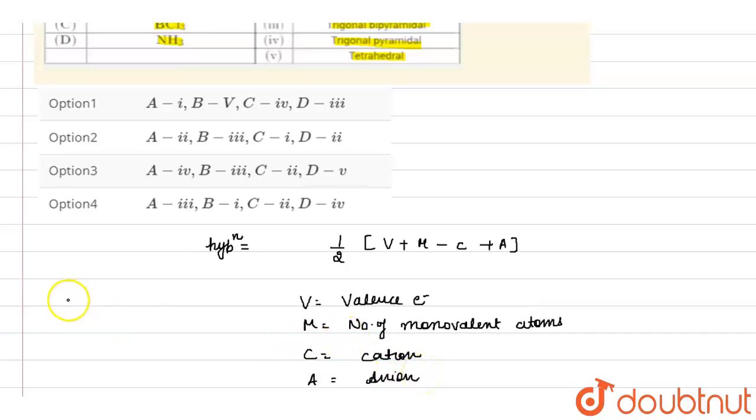And when the hybridization, when this value comes out to be 4, the hybridization is sp3. And the possibility of the shape can be tetrahedral or triangular pyramidal as well.